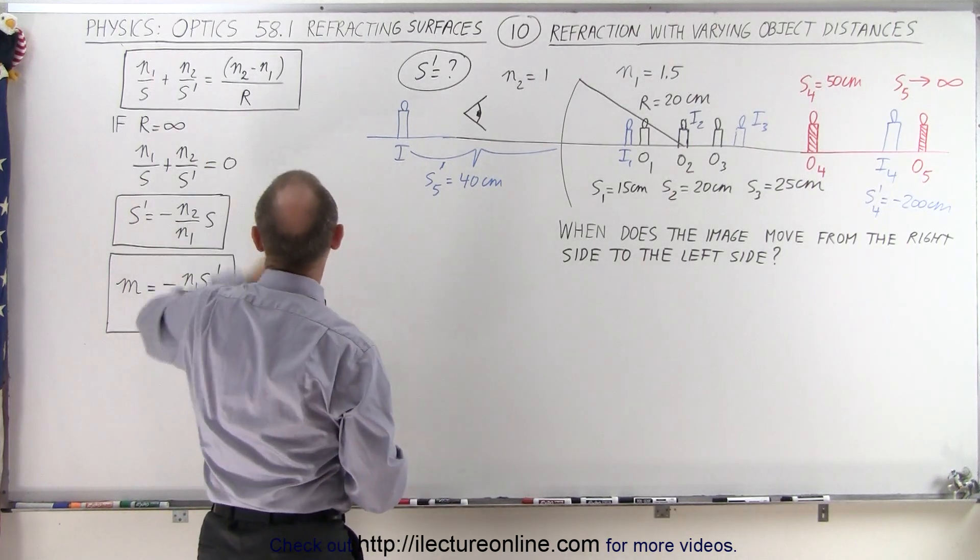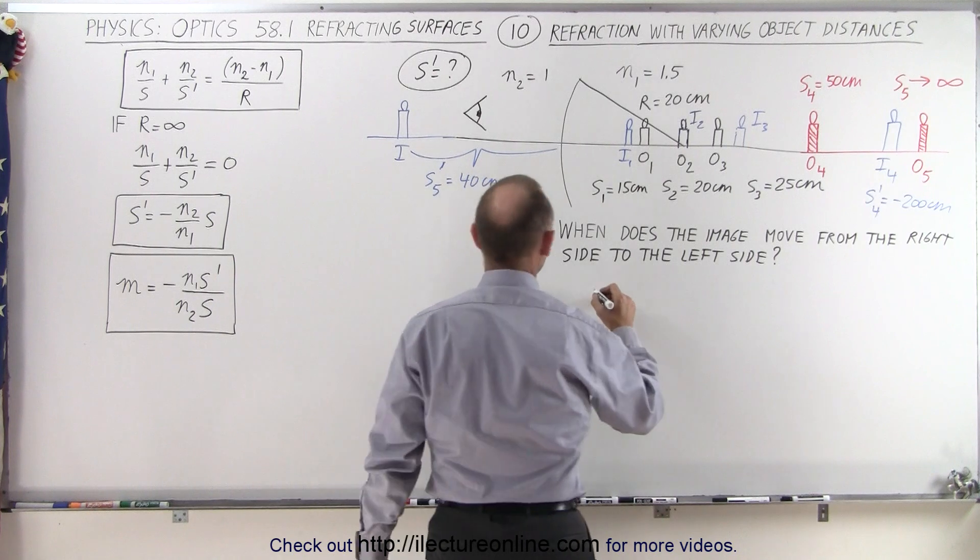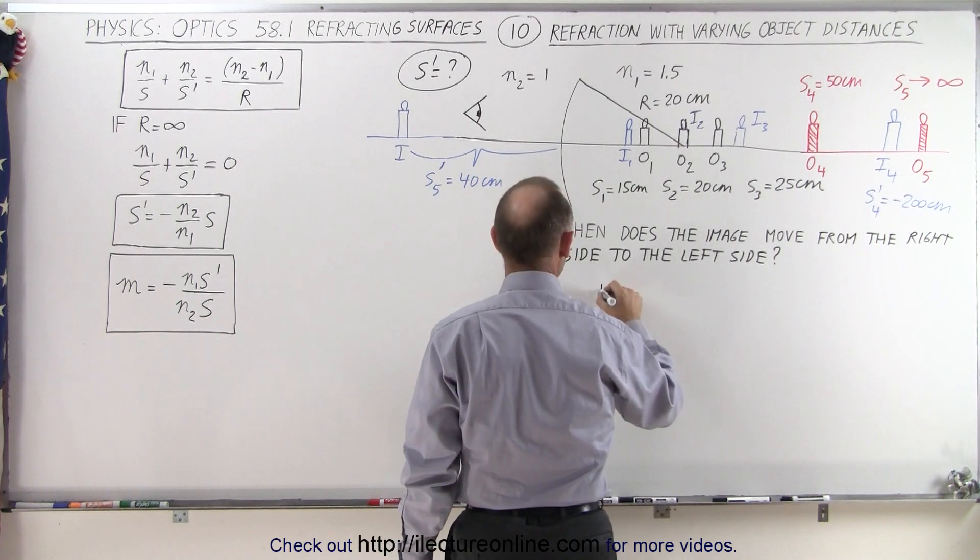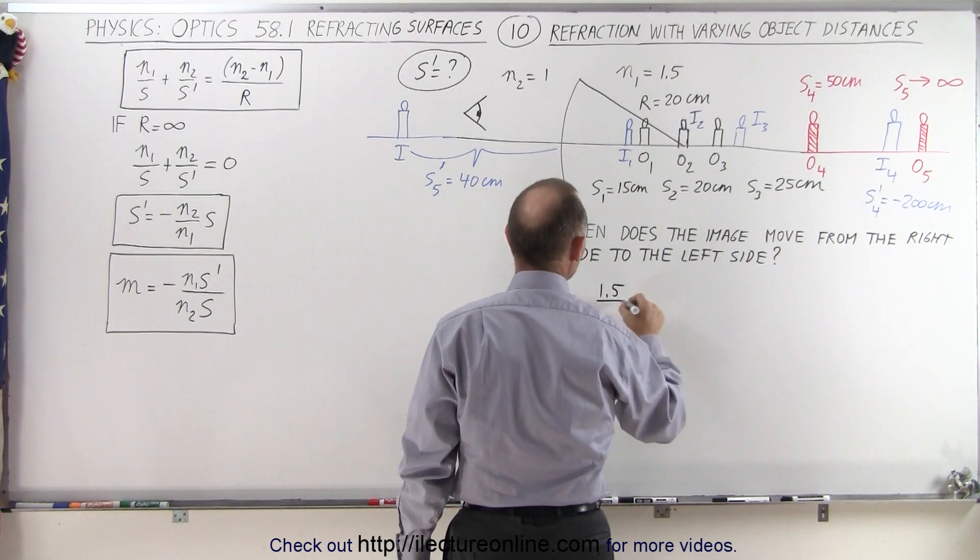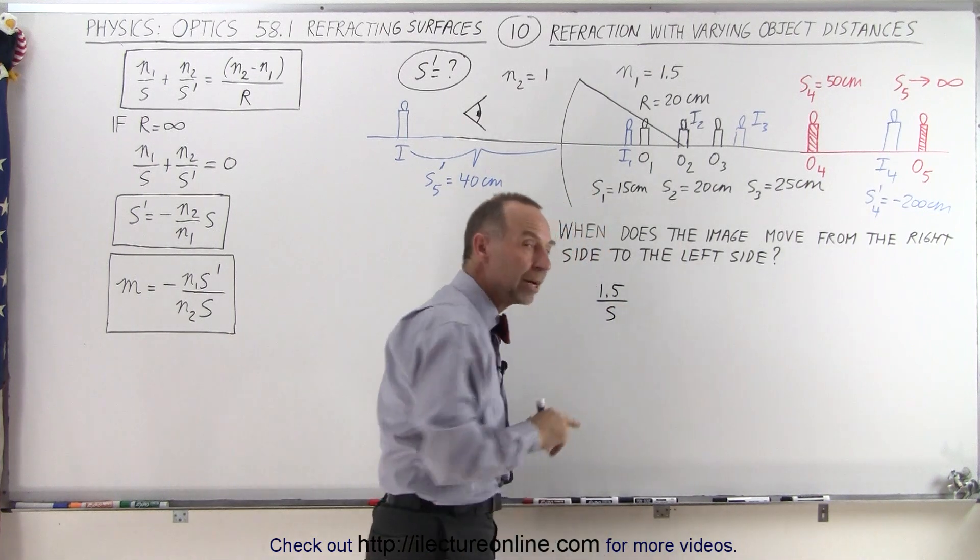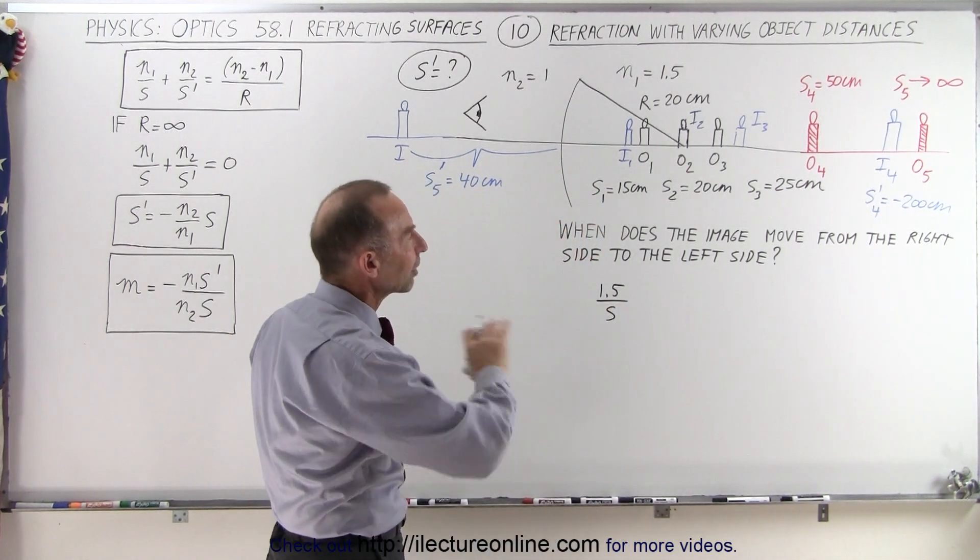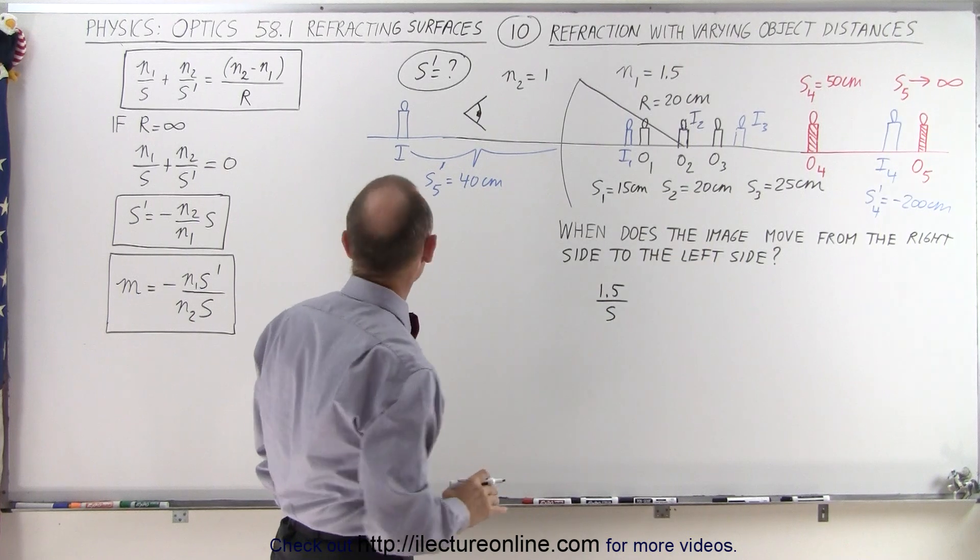Alright, let's go ahead and try to do that starting with this equation. So we have N1, which is 1.5, divided by S, because now S becomes the unknown quantity. Where do we place the object so that the image will move to infinity?